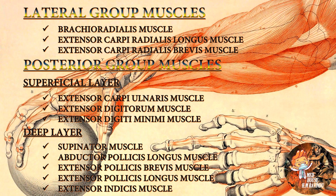Now I'm going to talk about the lateral and posterior group muscles. Lateral group muscles are: brachioradialis, extensor carpi radialis longus, and extensor carpi radialis brevis. Posterior group muscles are subdivided into superficial and deep layers. Superficial layer: extensor carpi ulnaris, extensor digitorum, and extensor digiti minimi. Deep layer: supinator, abductor pollicis longus, extensor pollicis brevis, extensor pollicis longus, and extensor indicis.